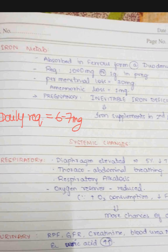Iron is absorbed in ferrous form at the duodenum and jejunum. Total body iron requirement throughout pregnancy is one gram (1000 mg). The daily requirement is most important during the third trimester — approximately 6 to 7 mg per day; menstrual loss is 30 mg and amniotic loss is 1 mg. During pregnancy, an inevitable iron deficiency state is established, so iron supplements must be given in the second and third trimester. Iron is stored as myoglobin, ferritin, or hemosiderin.